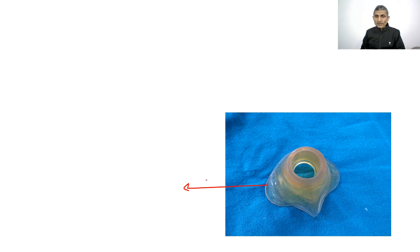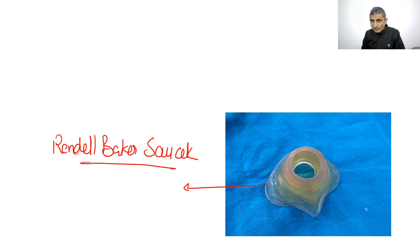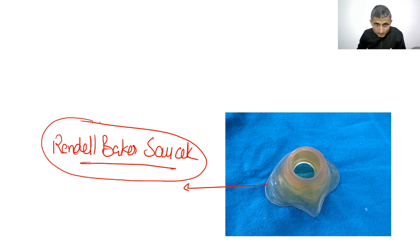This is a mask for infants and neonates — the Rendell-Baker Soucek mask — specifically used for pediatric patients. It is used for neonates because it has less dead space. When a mask is applied it increases dead space, which cannot be afforded in neonates and infants, so this specific mask with minimal dead space is used.